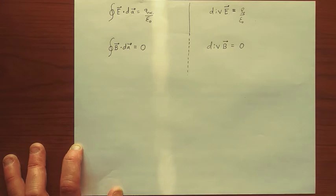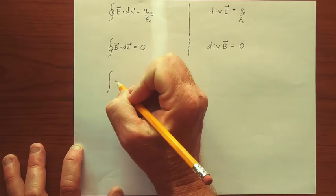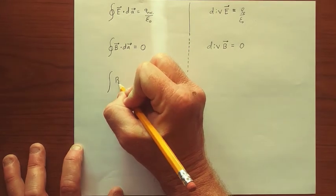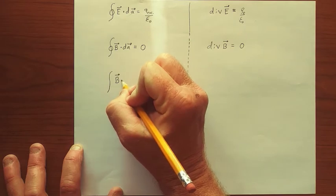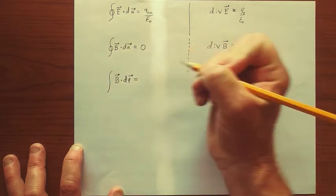Magnetic fields don't diverge away from current. They actually circle around the current. So let's look at the line integrals. So maybe we should start with magnetic fields. We know that magnetic fields circle around the source of magnetic fields, namely current.